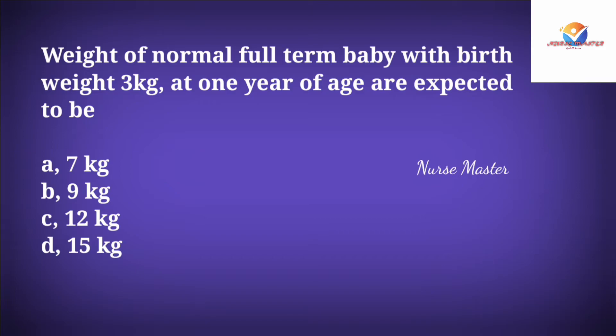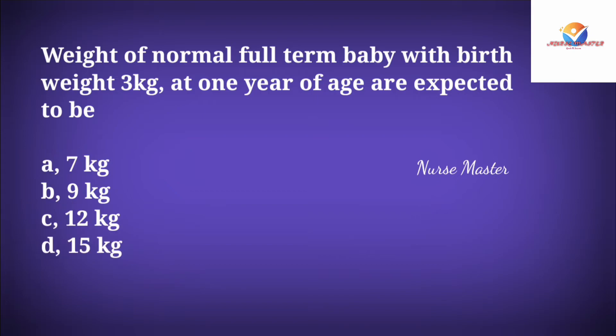Question: A normal full-term baby with a birth weight of 3 kg — what is the expected weight at one year of age? Option A: 7 kg. Option B: 9 kg. Option C: 12 kg. Option D: 15 kg. The correct answer is Option B: 9 kg. A baby's weight doubles at 6 months and triples at one year of age.